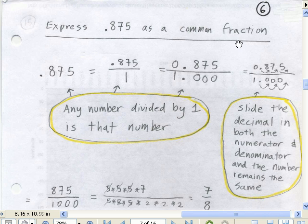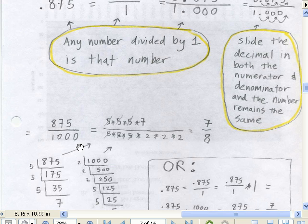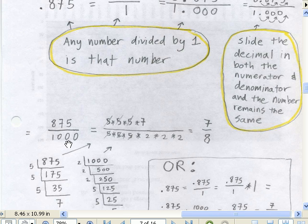Express 0.875 as a common fraction. Well, there's a few ways we can do this. Here it is. And we can divide any number by 1 and still get the same number. So we'll start that way. And then we can simply with division, as we saw last chapter, we can slide the decimal, as long as we slide it in the top and the bottom. So we slide it 1, 2, 3.